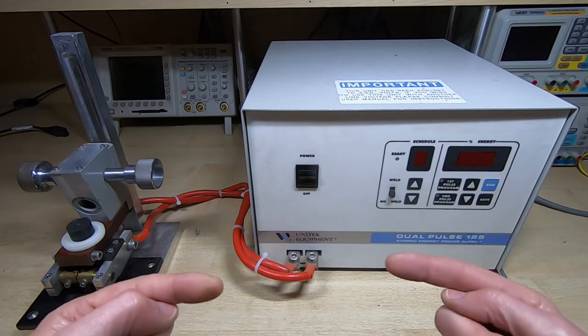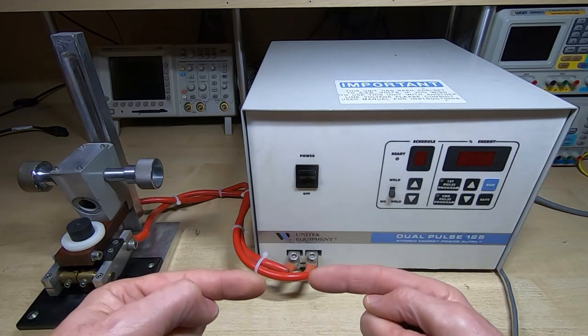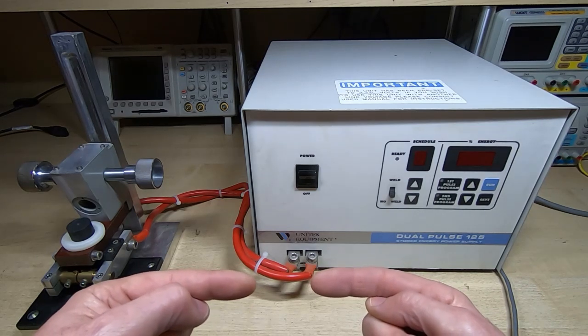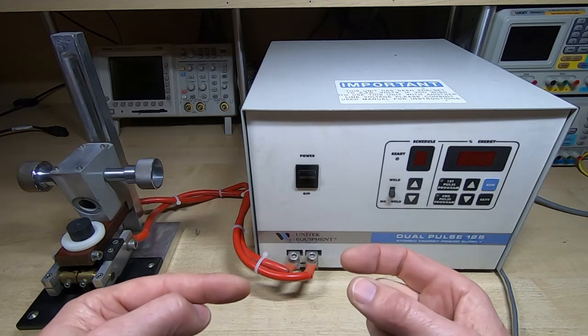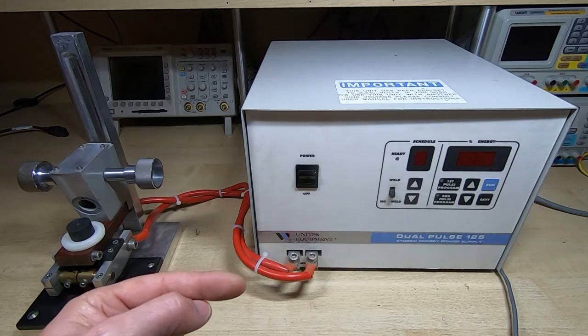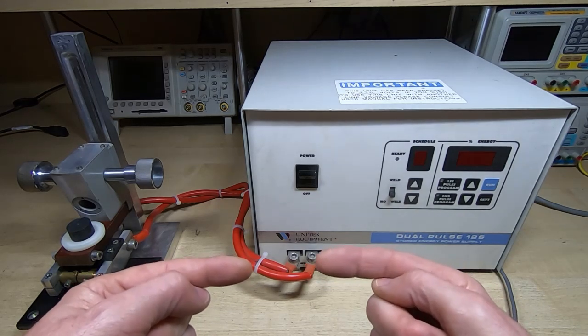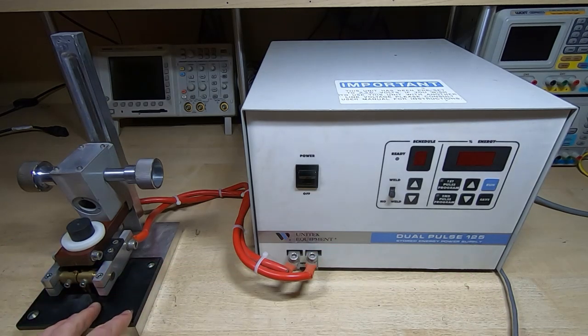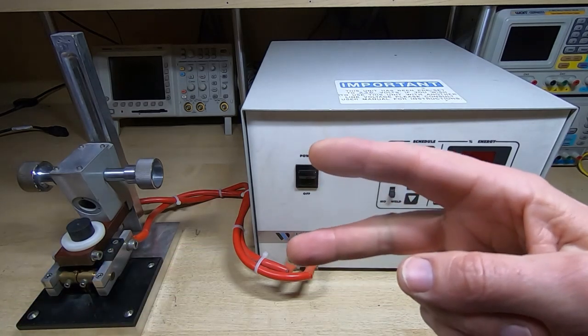So normally with spot welding you'll put a contact on either side of a joint, pass a high current pulse through that joint, and it momentarily melts and fuses the metal between the two contacts.